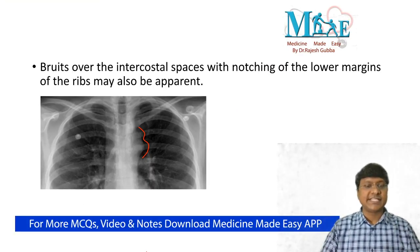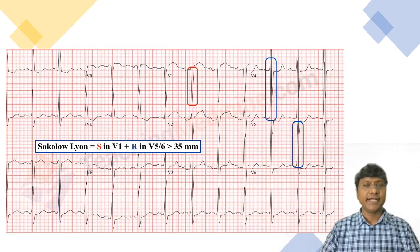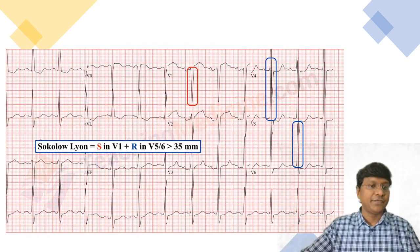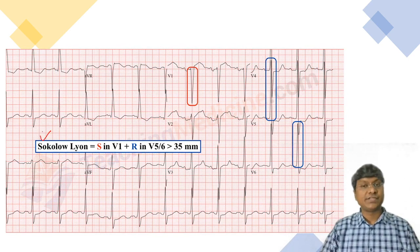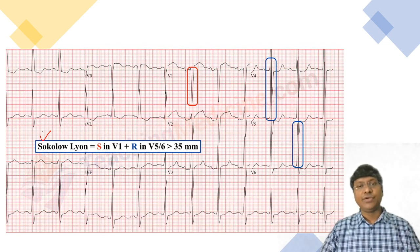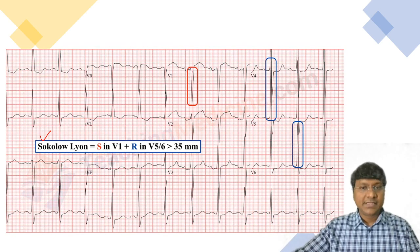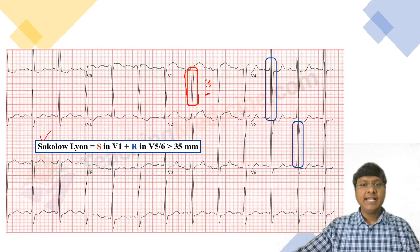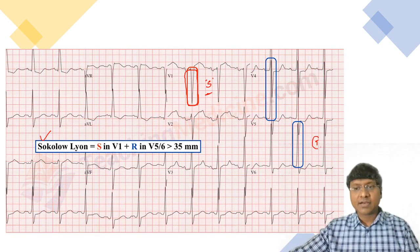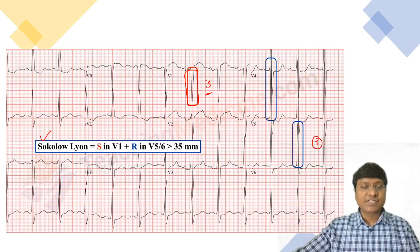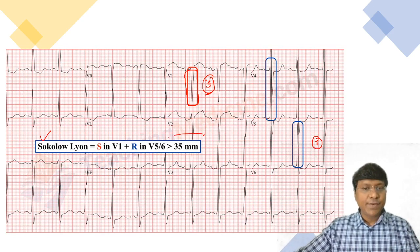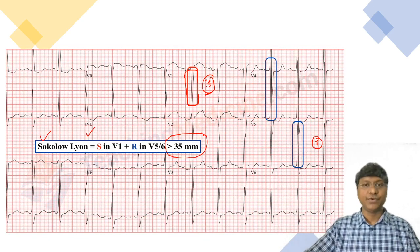ECG is suggestive of left ventricular hypertrophy. The criteria for left ventricular hypertrophy is the Sokolov-Lyon criteria — a very important and frequently exam-tested criteria. If you sum up SV1 and RV5 or V6, the sum should be more than 35 mm, which is suggestive of left ventricular hypertrophy according to the Sokolov-Lyon criteria.